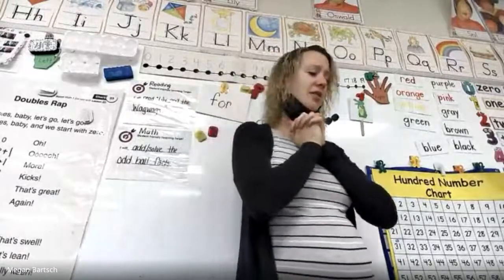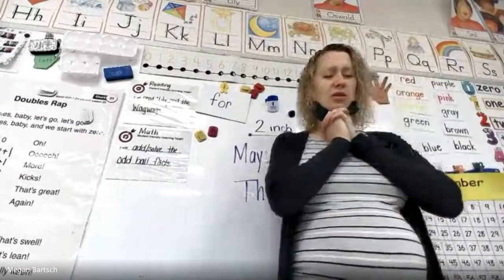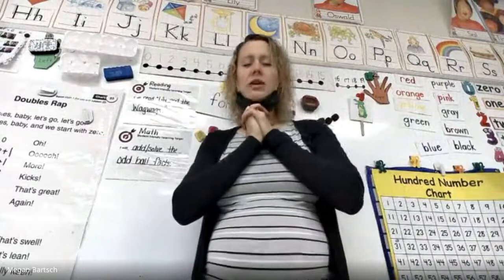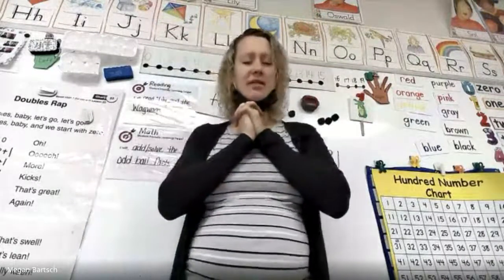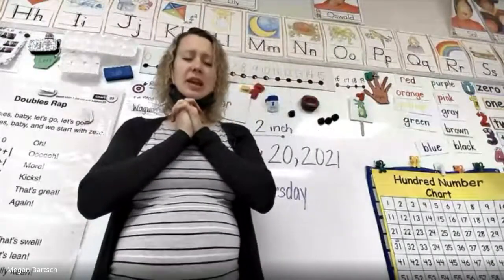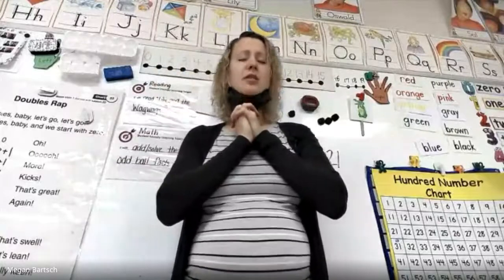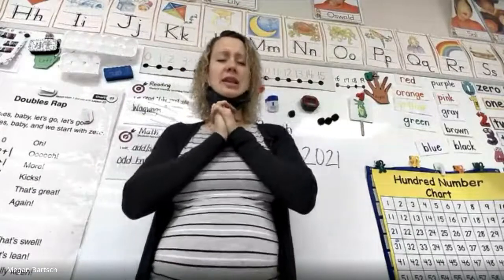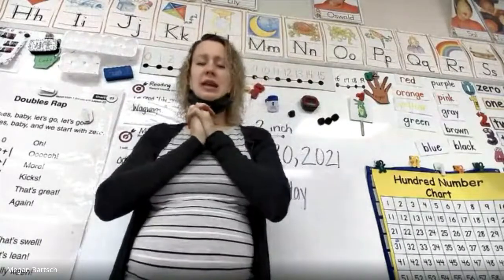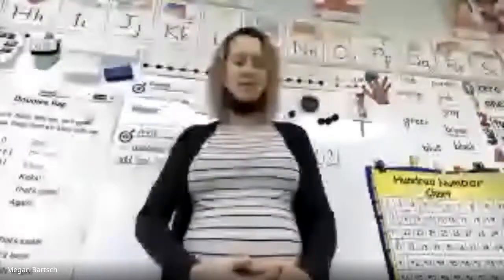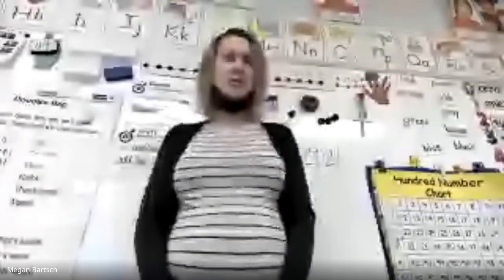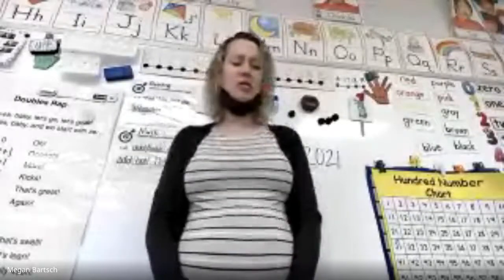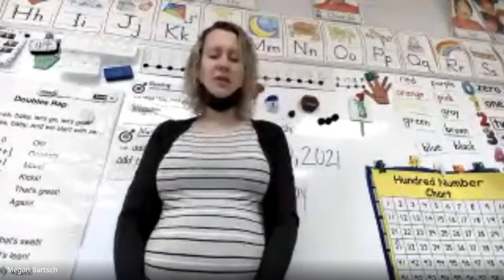Our Father in heaven, hallowed be your name. Your kingdom come, your will be done on earth as in heaven. Give us today our daily bread. Forgive us our sins as we forgive those who sin against us. Lead us not into temptation, but deliver us from evil. For the kingdom, the power, and the glory are yours, now and forever. Amen.